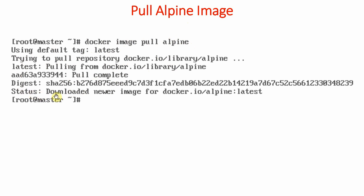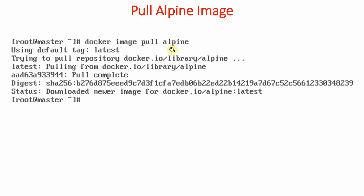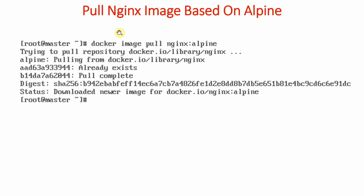It will show the status: downloaded image from docker.io/alpine. That is how we pull and download an image. We also need a web server image. Two popular web servers are nginx and Apache. In our case we will pull: docker image pull nginx:alpine. Images based on alpine have a very small size. So now we have pulled two images — the alpine image and an nginx web server image based on alpine.